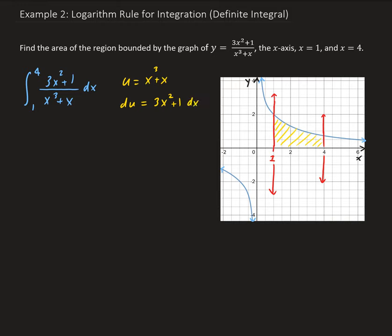All right, and so from here we're going to have du in the numerator here. So our integral is going to be 1 over u times du. So all this is going to get replaced by du.